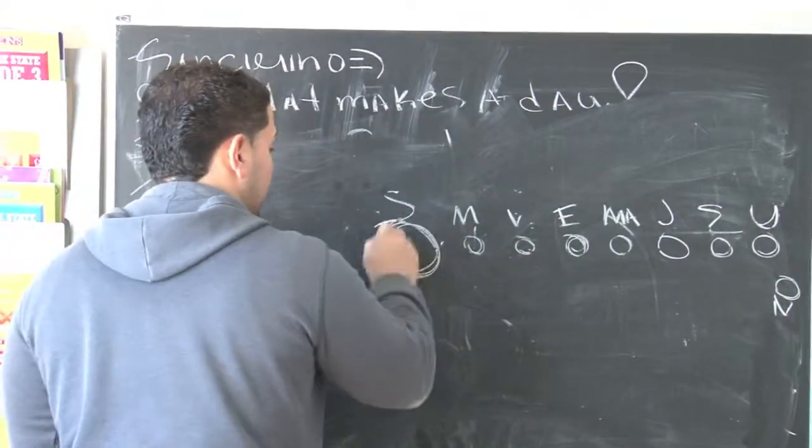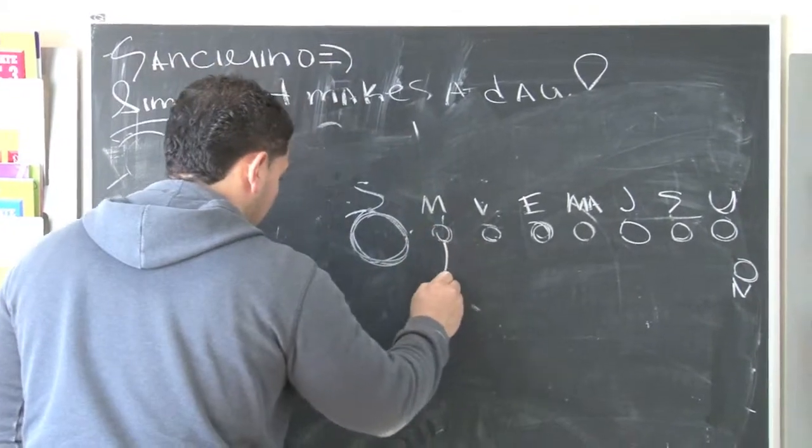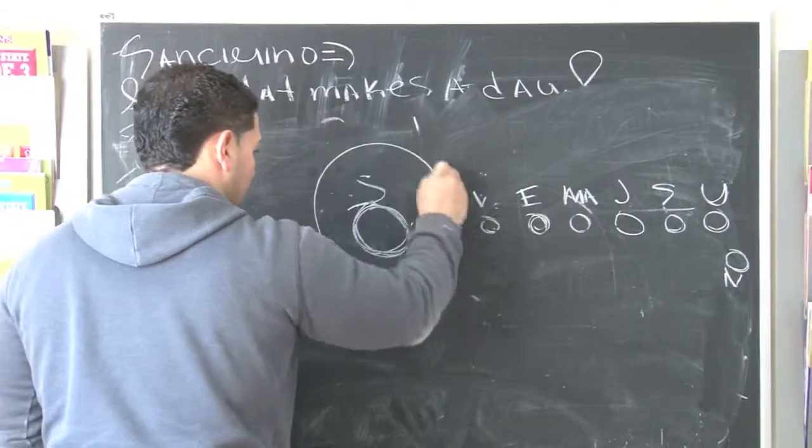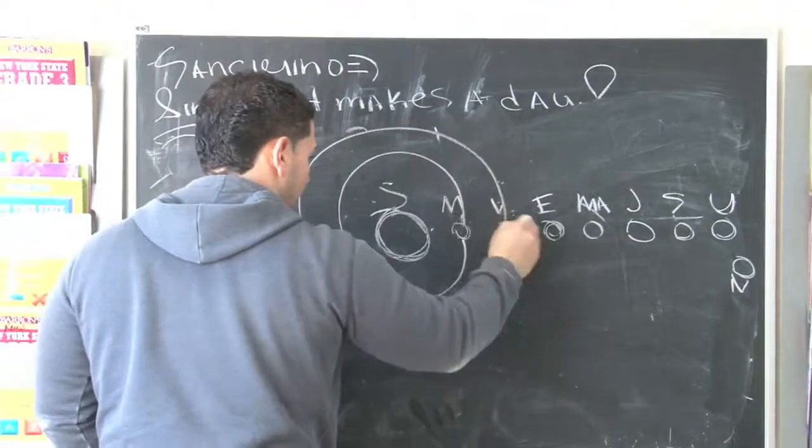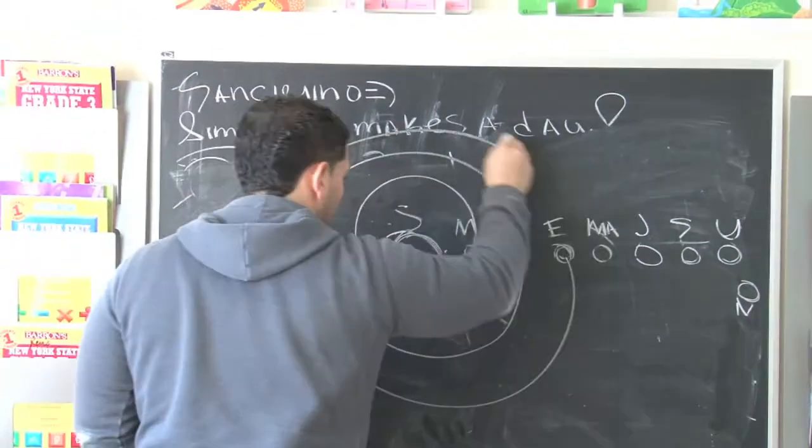So what happens is the sun is the center, right? So it pulls the planets around, right? Oh. Right? And then this goes around. And this goes around.